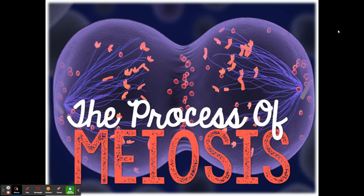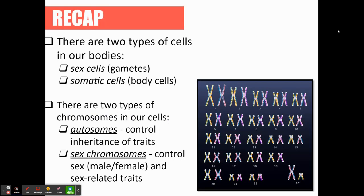Welcome. We are talking about meiosis, not to be confused with mitosis. We talked about mitosis in our cells unit. There are some similarities between mitosis and meiosis — they're both types of cell division — but mitosis is a type of cell division that happens in our somatic cells, which are our body cells. Meiosis is going to be how our gametes are created. If you are male, this is how your sperm is created; if you're female, this is how your eggs are created. Gametes is just another term for our sex cells.